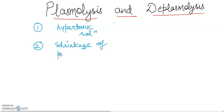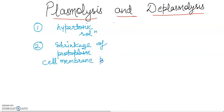As I have told you before in previous videos, protoplasm consists of cytoplasm along with the nucleus. So the shrinkage is going to happen in the protoplasm, and the cell membrane is pulled away from the cell wall. You all know that in a plant cell, both a cell wall and a cell membrane are present.